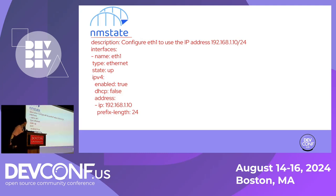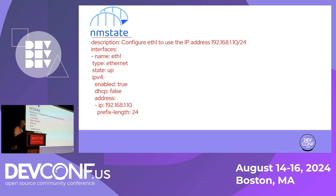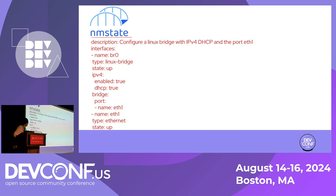Here's an example of well-prepared data. We have a description: 'Configure ETH1 to use IP address.' The sorting is not alphabetical — we have a specific order based on how it's implemented in NMState — but it's already normalized and sorted in the proper order. This is another well-prepared data example for 'Configure Linux bridge with IPv4 DHCP and port ETH1.' We edit the description and sort the states properly.